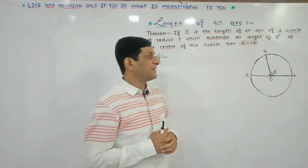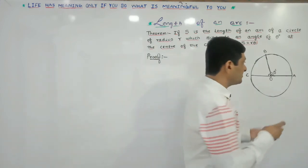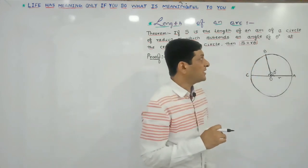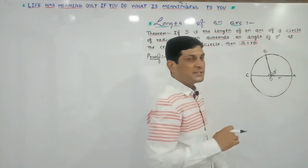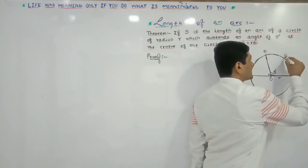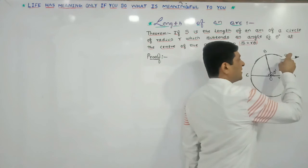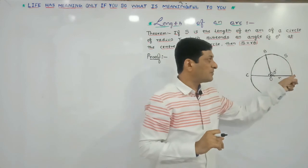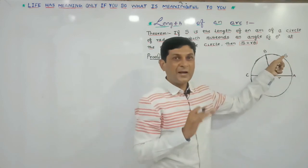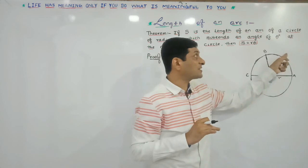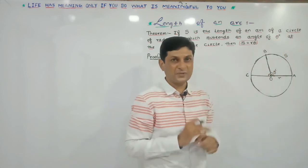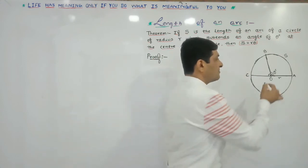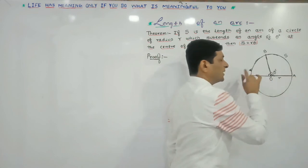Now let us consider the given condition. R is the radius of the circle. We are taking two points on the circle, A and B, such that arc length AB equals S, and this arc length subtends an angle of theta radian at the center of the circle. We also take another point C on the circle such that angle AOC equals 180 degrees.